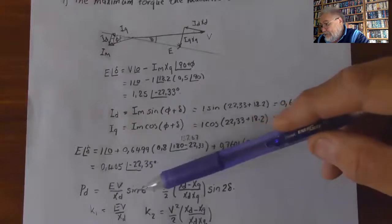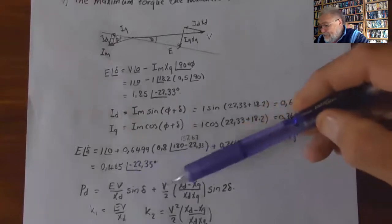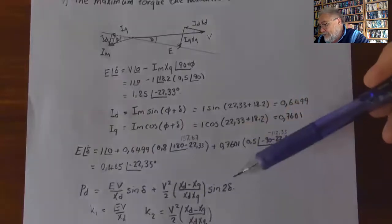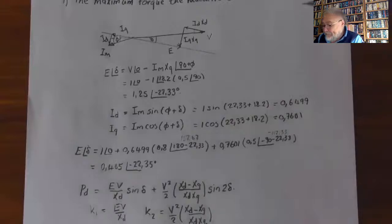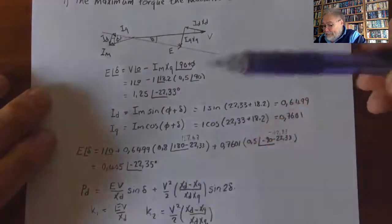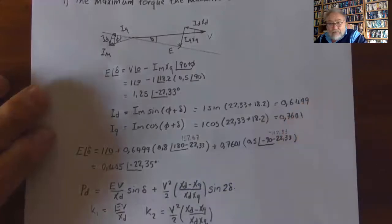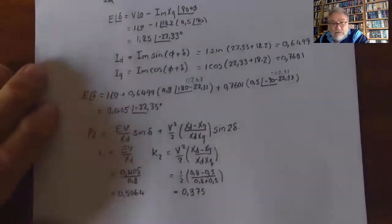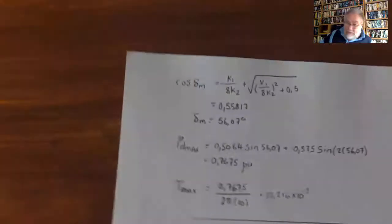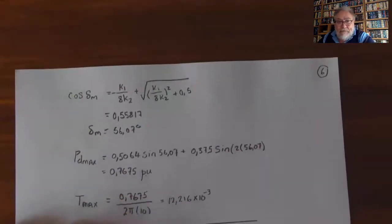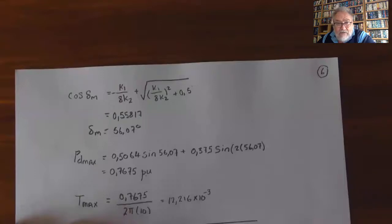The developed power has two components: P_excitation = EV/Xd · sin(δ), so k1 = EV/Xd = 0.5064; and P_reluctance = V²/2 · (Xd − Xq)/(Xd·Xq) · sin(2δ), so k2 = V²/2 · (Xd − Xq)/(Xd·Xq) = 0.375. To find the maximum load angle: δ_max = −k1/(8k2) + √{[k1/(8k2)]² + 0.5} = 0.55817, giving a load angle of 56.07°.